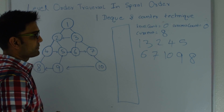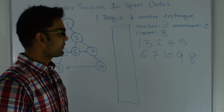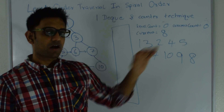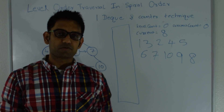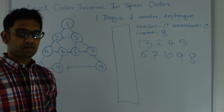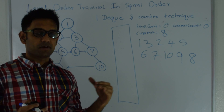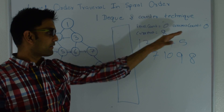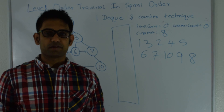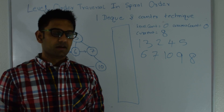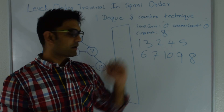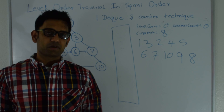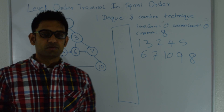As soon as the queue is empty I break out of the while loop. I'm using level count and current count to track the number of elements at the current level and the next level respectively. As soon as level count reaches 0, I start looking from the other side of the queue.